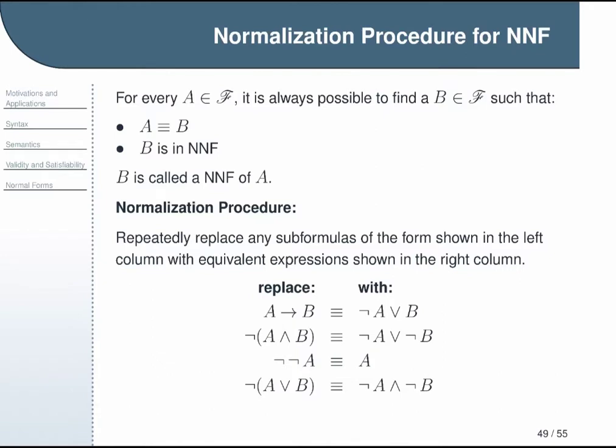You just replace all the implication symbols with the equivalent expression not A or B, and you use DeMorgan's laws to move negation symbols inward wherever they are applied to expressions. And of course you can always eliminate double negations whenever they show up. So a nice thing about this procedure that is worth pointing out is that the time it takes grows linearly with the length of the formula, so that is not too bad.